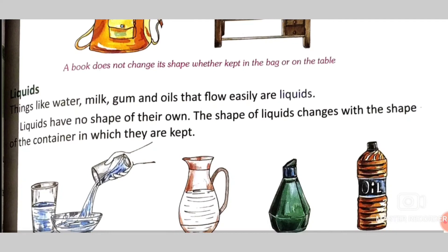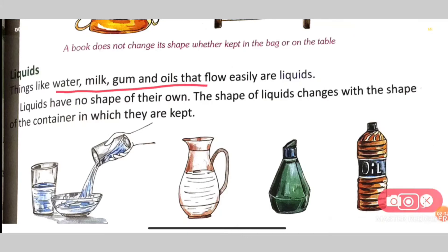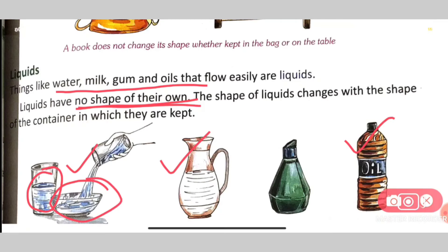Next we will learn about liquids. Water, oil, and milk are all liquids. Liquids have no shape of their own. If you have a glass, the liquid will take the shape of the glass. If you have a bowl, it will take the shape of the bowl. If you have a bottle, it will take the shape of the bottle. So liquids do not have a particular fixed shape.